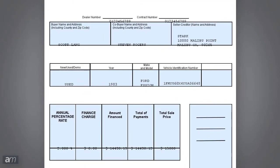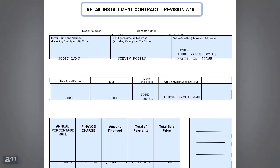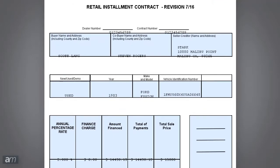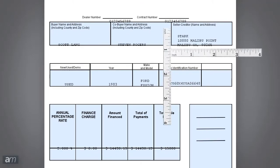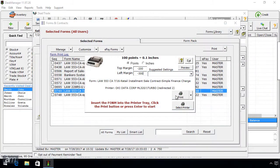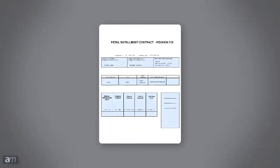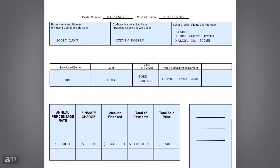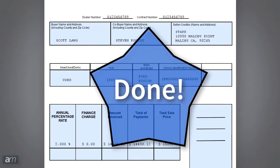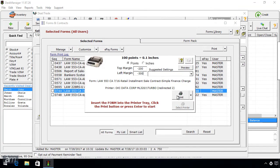If the text still is not lining up with the corresponding fields in the form, double check that the pre-printed form revision date matches the revision date in the form name in DeskManager. If they match, then measure the distance and direction in inches that the text needs to be moved, and repeat the previous steps. Print again, and if the text needs further adjustment, repeat the alignment steps until the text lines up with the corresponding fields on the form. If the text lines up with the corresponding fields, you are done! The next time you print this form, the margin tool will remember the last used margin settings.